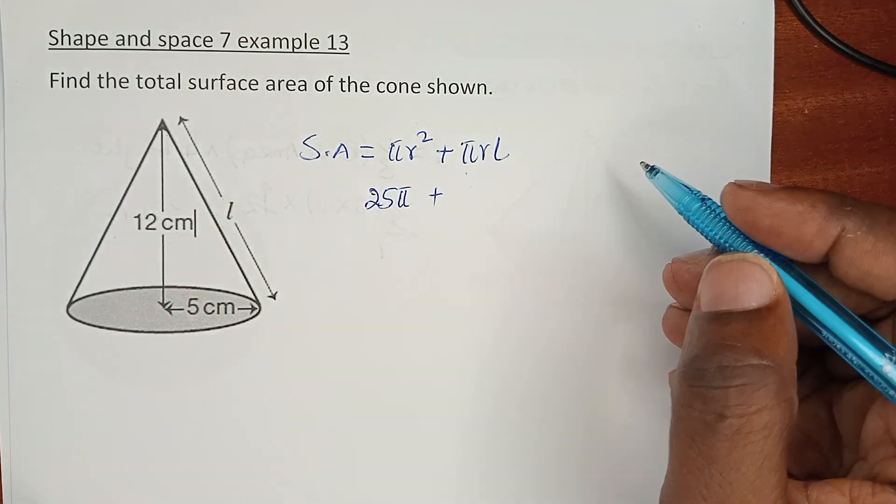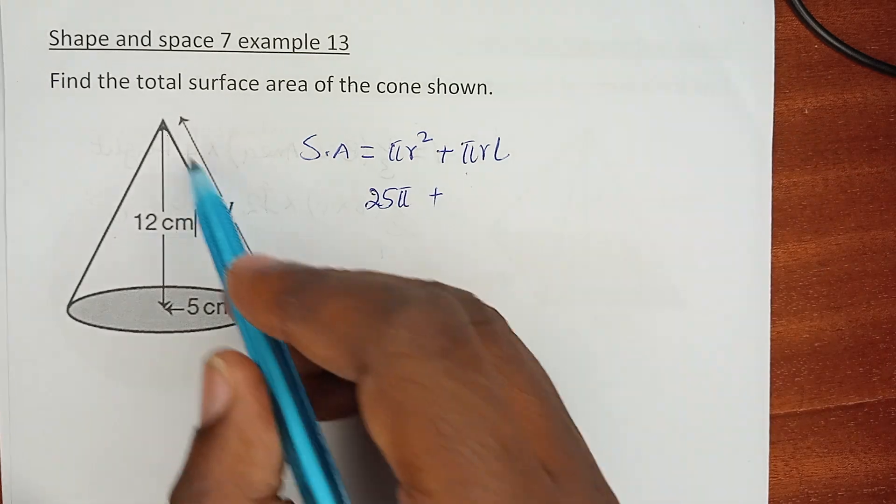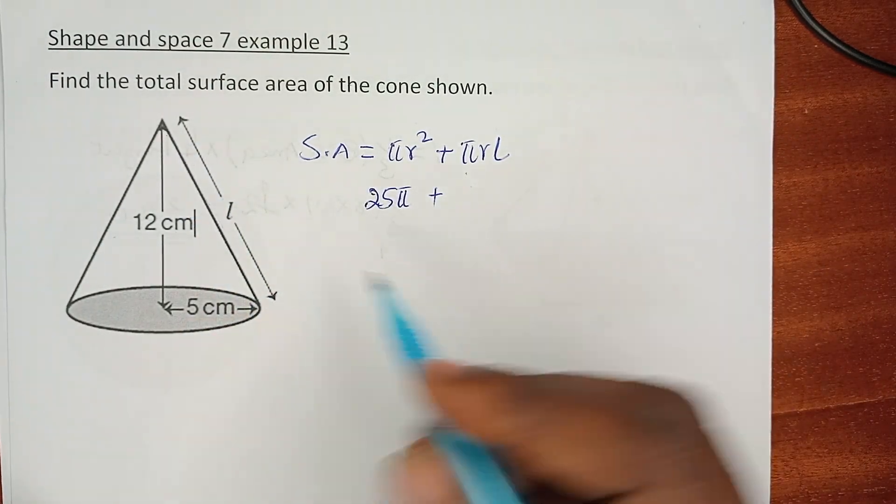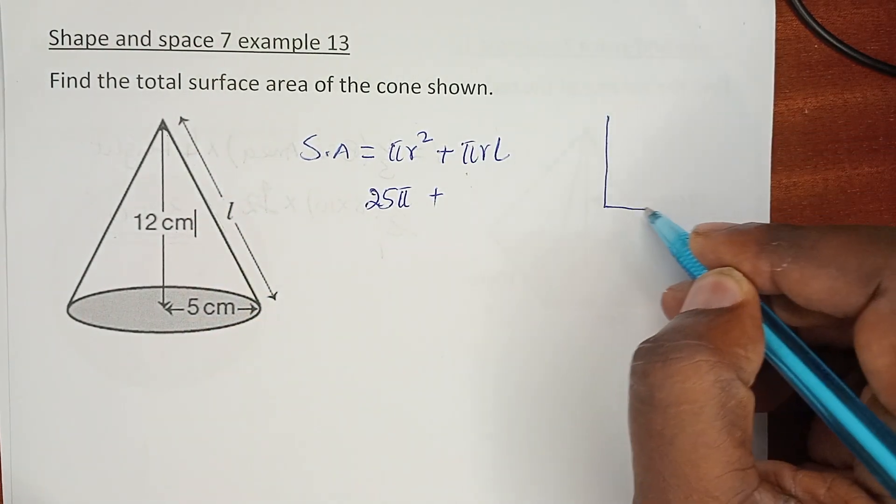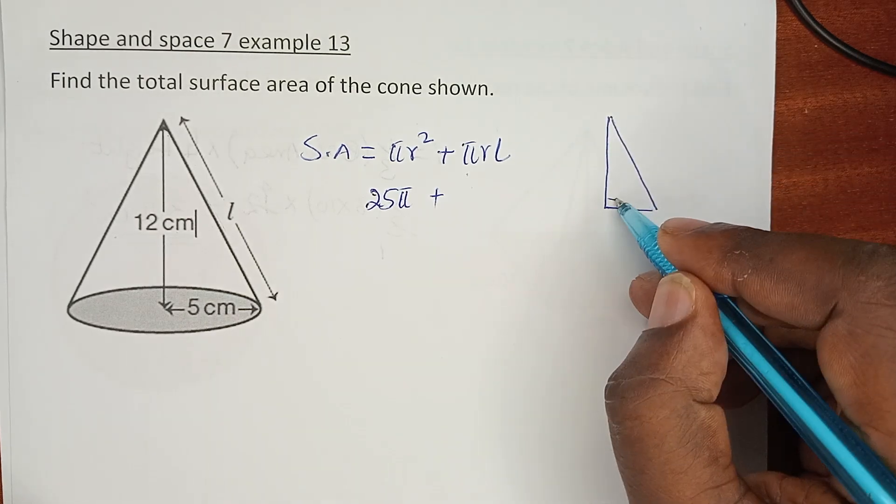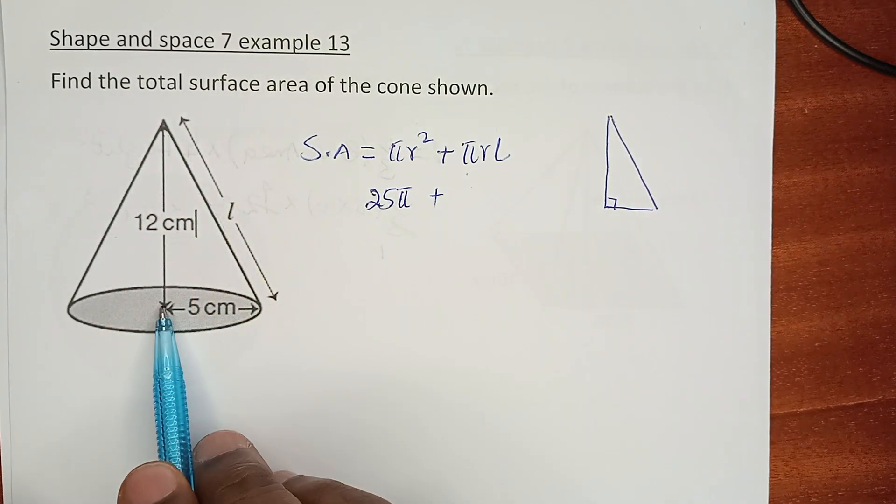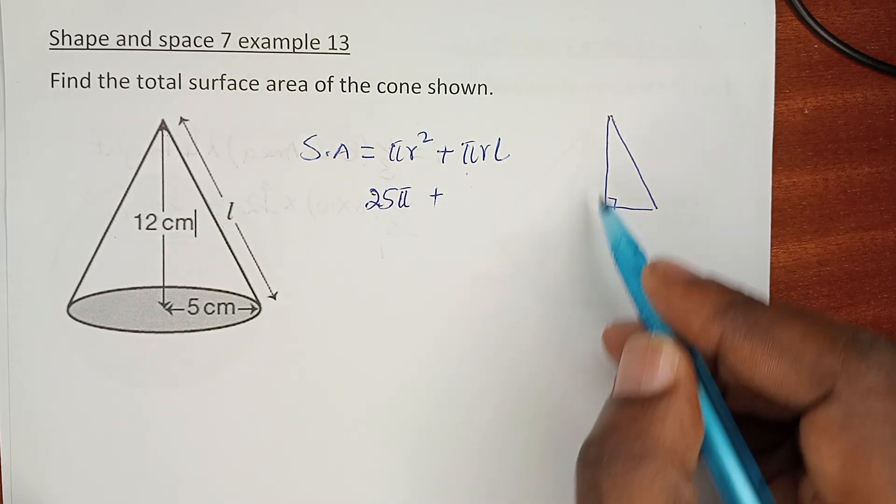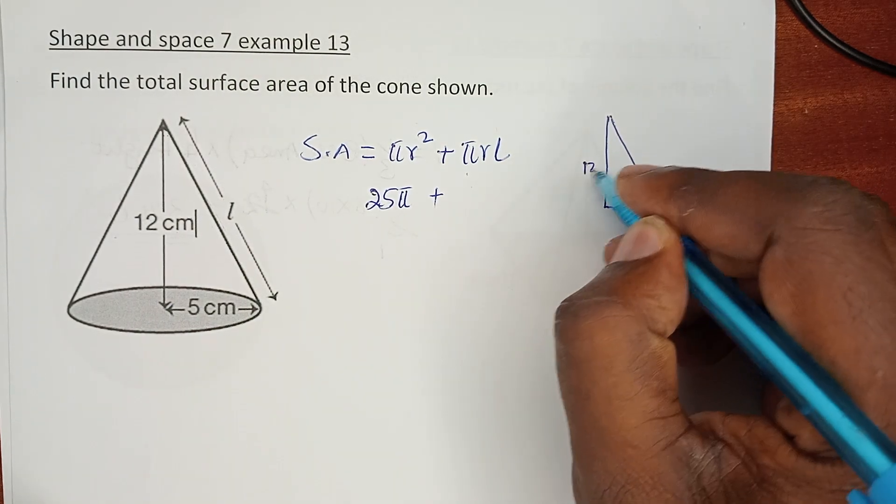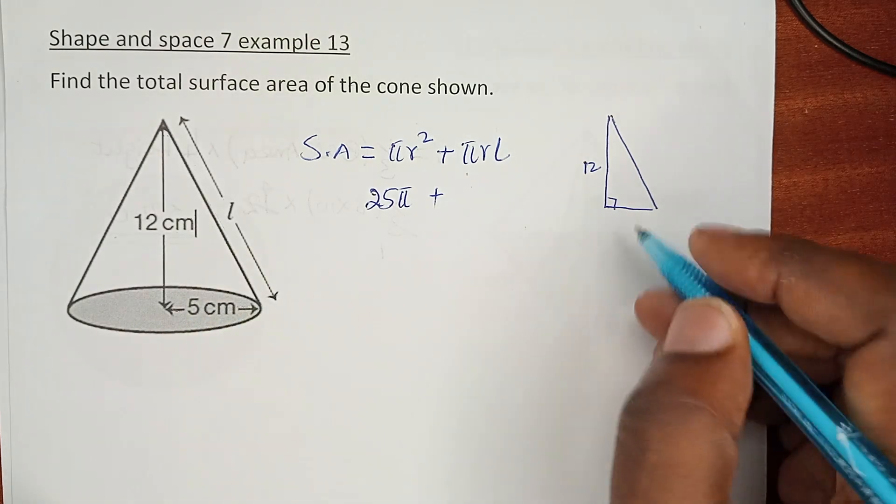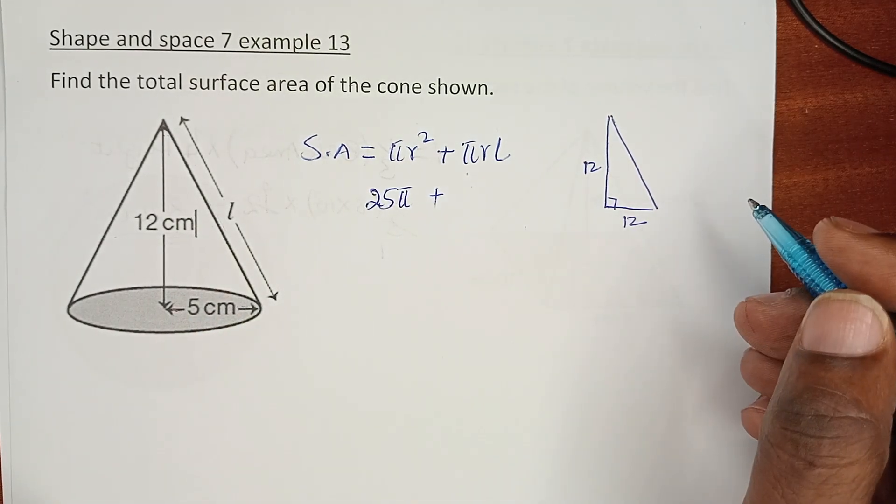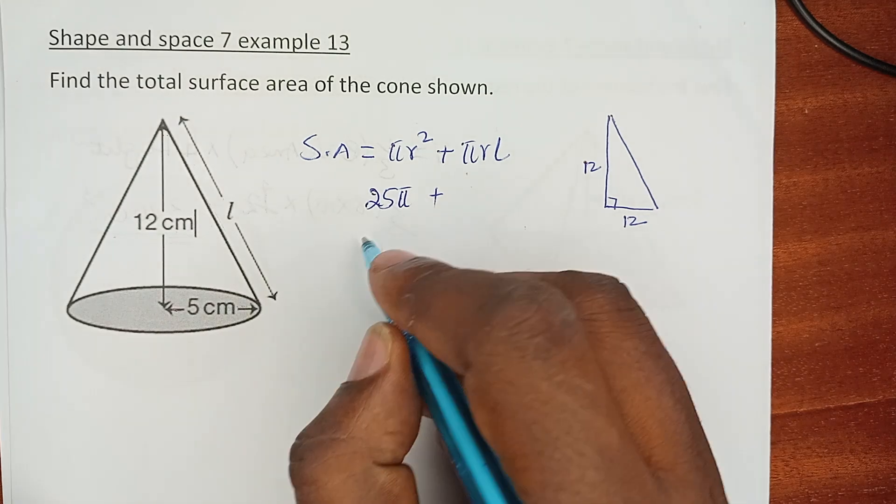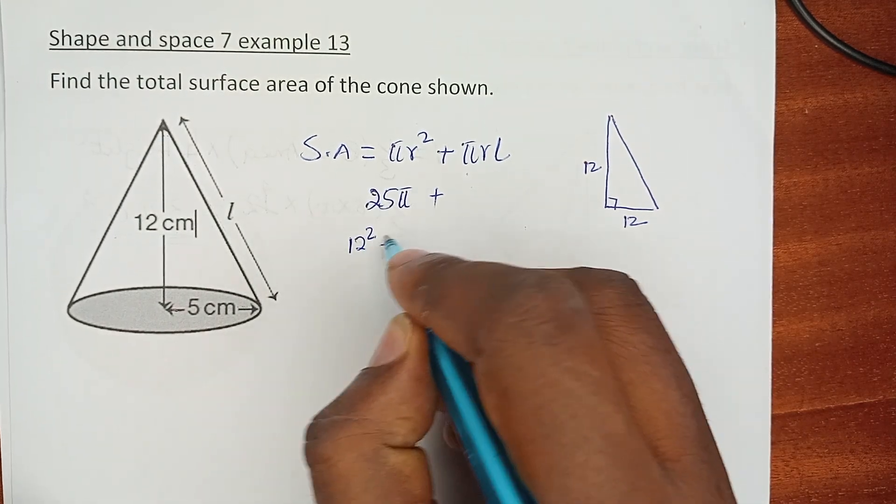You realize that L is not very direct because it's the slanting height, but we can pick a right angle triangle. This to the bottom, to the center of the bottom, we can have 12 and then this is the radius which is 5. Using Pythagorean theorem we have 12² + 5².